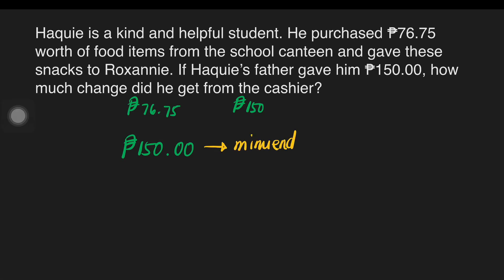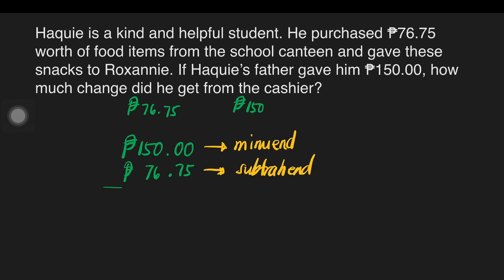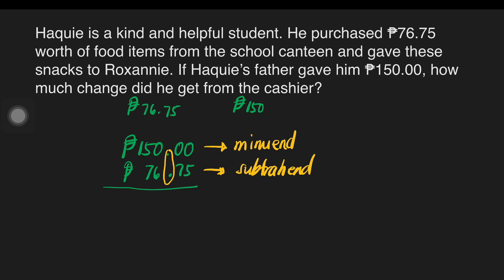We also have 76 pesos and 75 centavos. We call this number our Subtrahend. We are now ready to subtract. But before that, we need to make sure that the decimal points are aligned, or else we will arrive at the wrong answer. So make sure that these are aligned. We can now subtract.